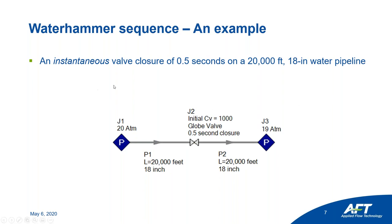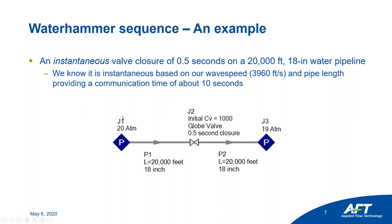We're going to look at an instantaneous valve closure of half a second. The valve will be closed completely in half a second on a 20,000-foot pipeline with an 18-inch diameter. Based on the wave speed provided by Impulse — determined by pipe material, fluid, and temperature — we can use the communication time equation: 2L/a = 40,000 divided by about 4,000 (wave speed) = 10 seconds communication time. Since our half-second closure is far below that, the valve closure is instantaneous.